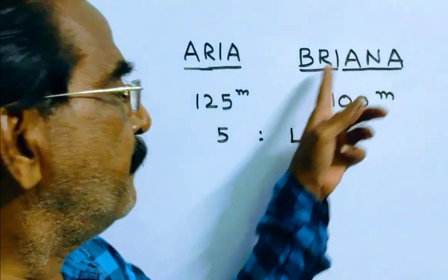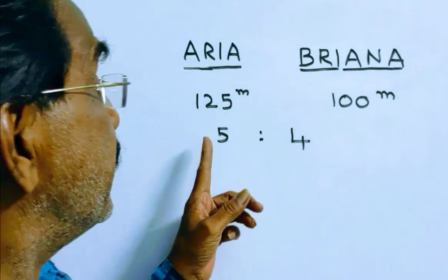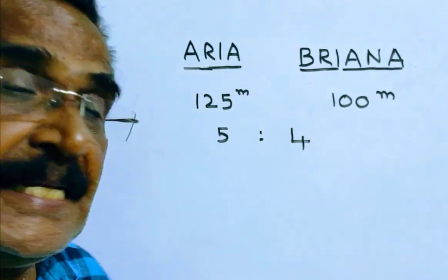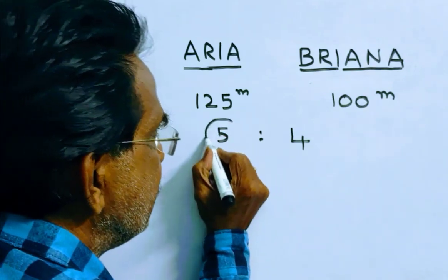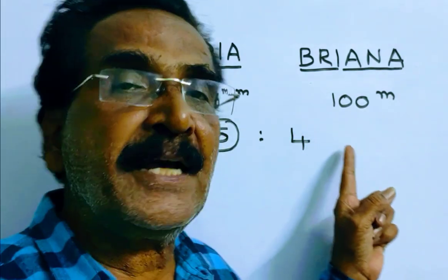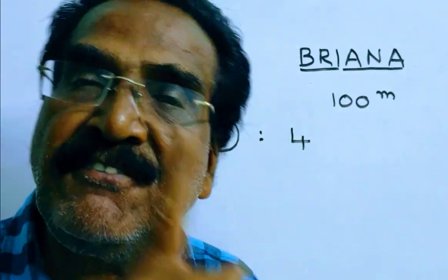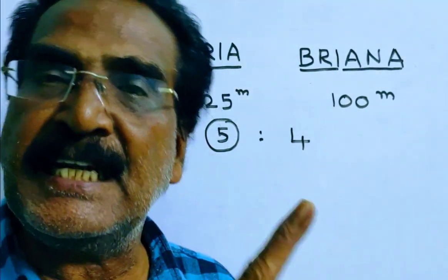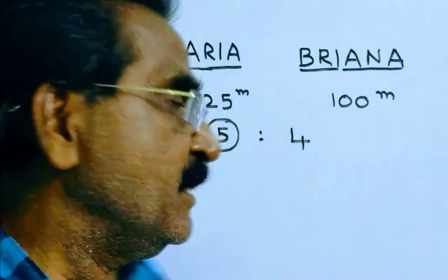That means if Briana runs 4 meters, Aria runs 5 meters. So in a race of 5 meters, Briana must be given a lead of 1 meter to finish the race.